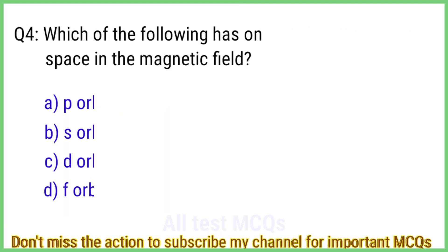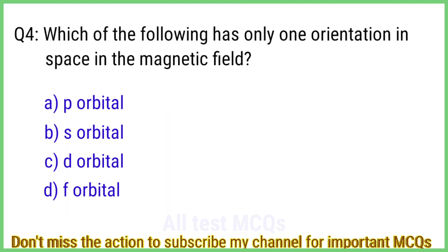Question number 4. Which of the following has only one orientation in space in the magnetic field? The right answer is option B: S orbital.